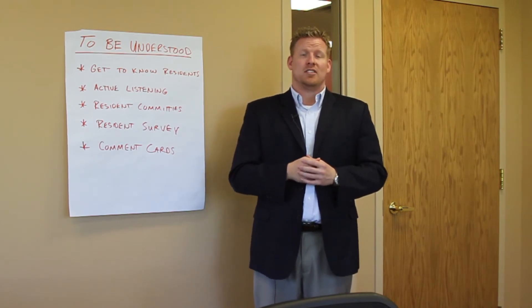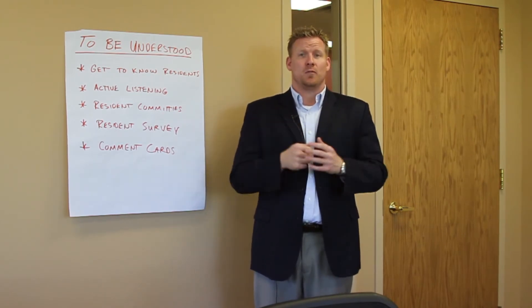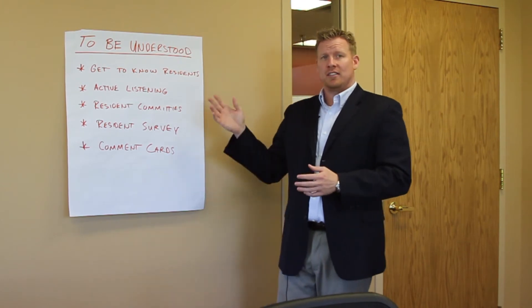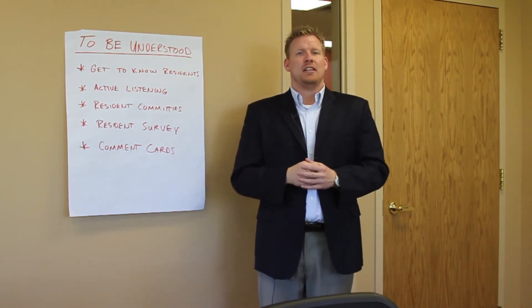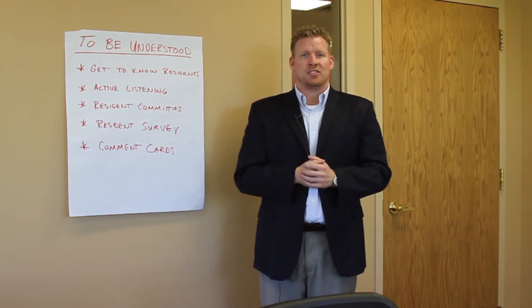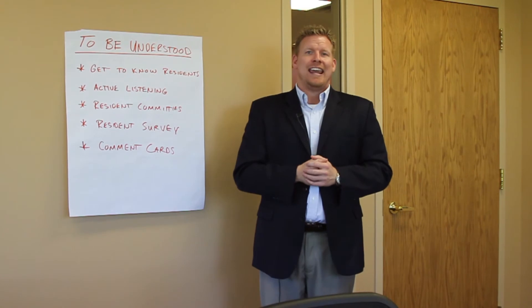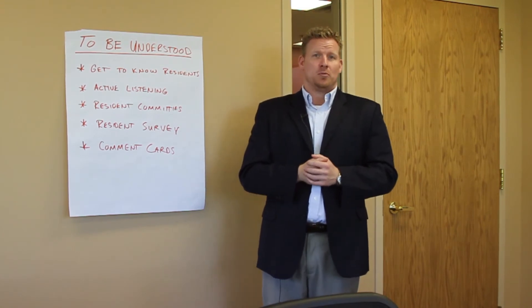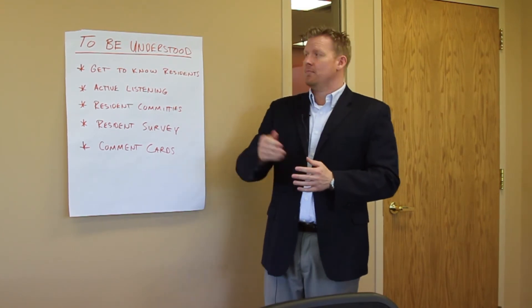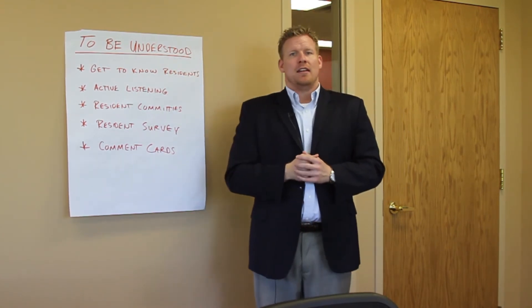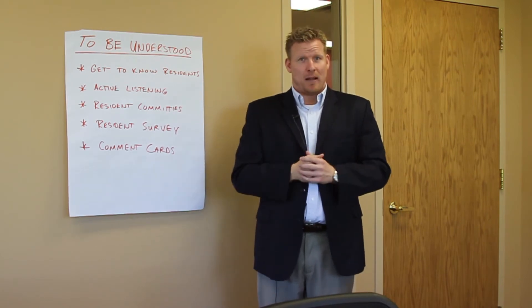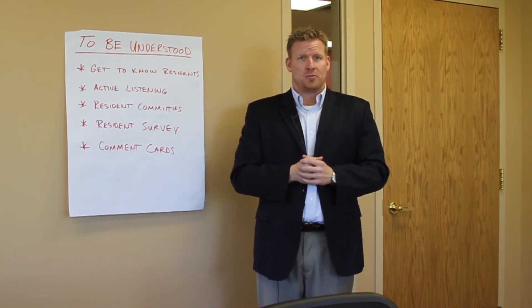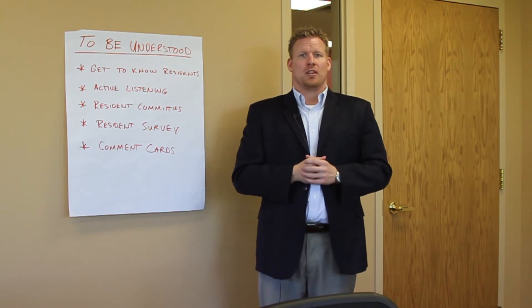One way to do this is to use large flip chart paper that can stick to the wall, like so. Take 5 sheets and spread them around the room at your next all-staff meeting. Each should have one of the 5 Human Truths written on it, like so. Next, have your staff count off by 5's and divide them into 5 different groups, one group for each of the Human Truths.